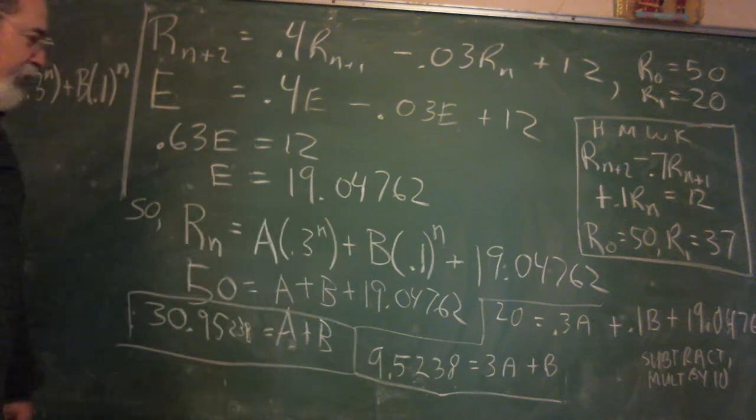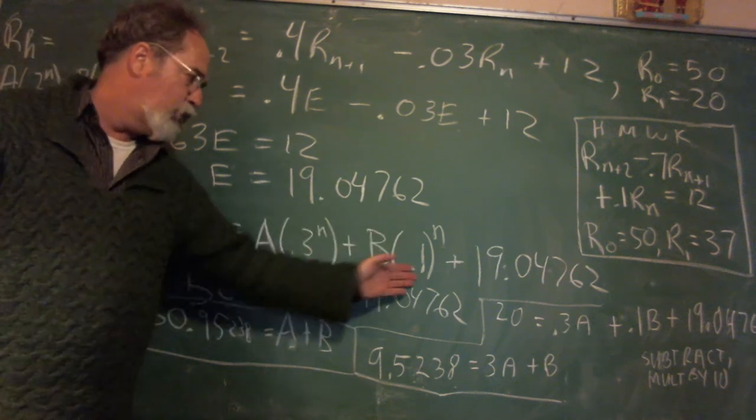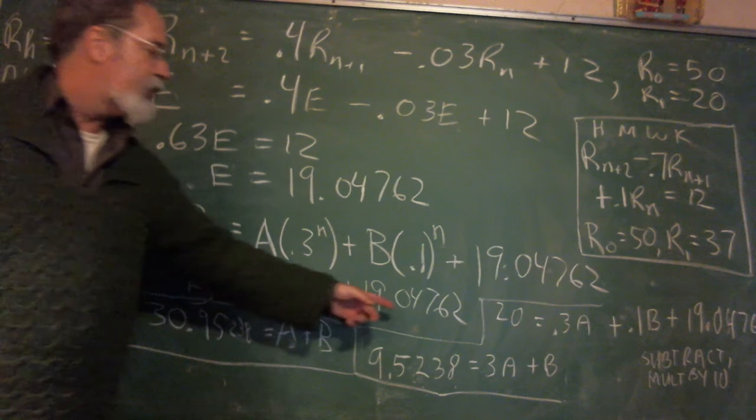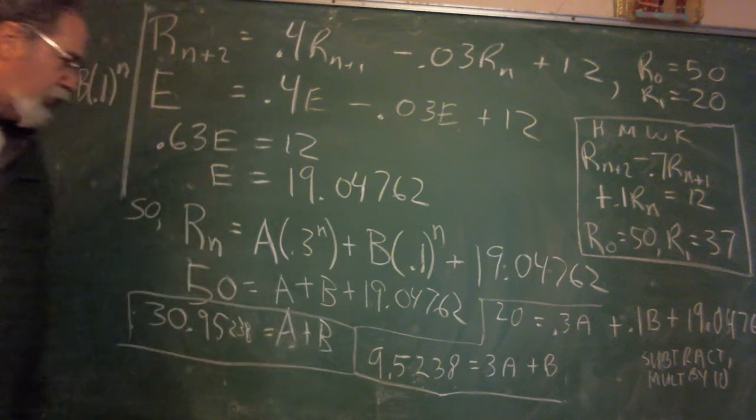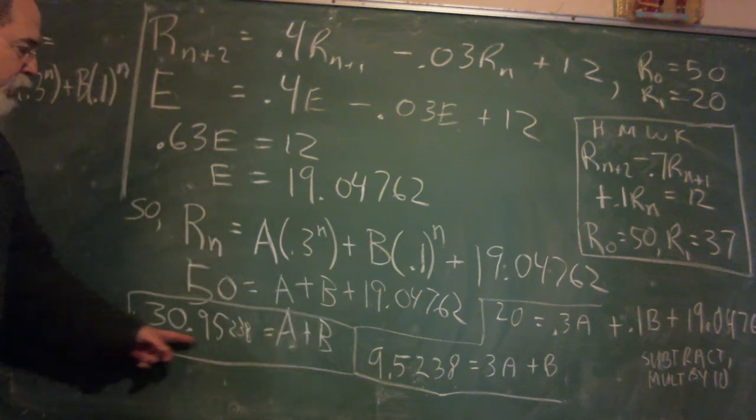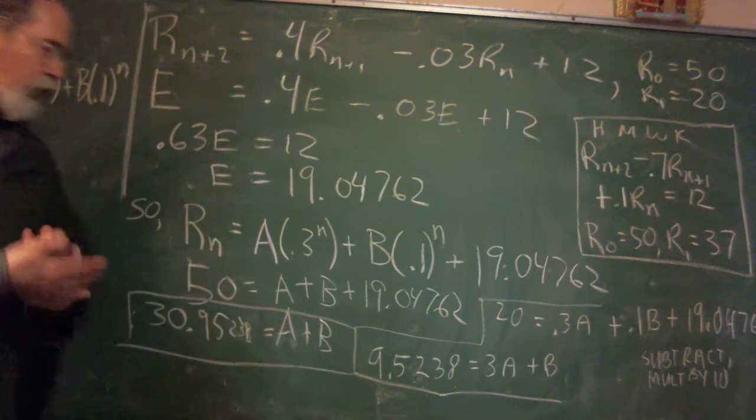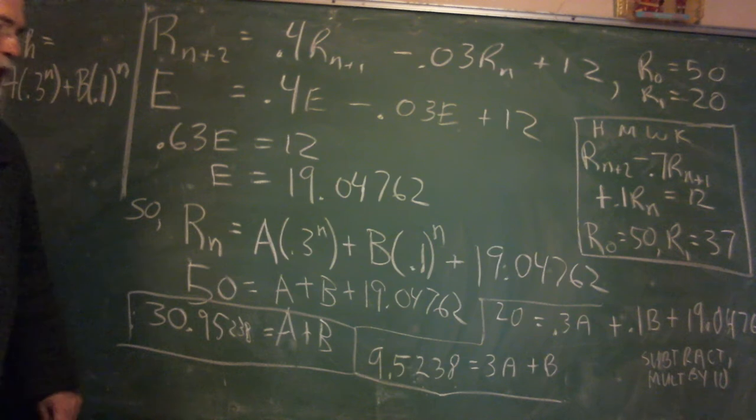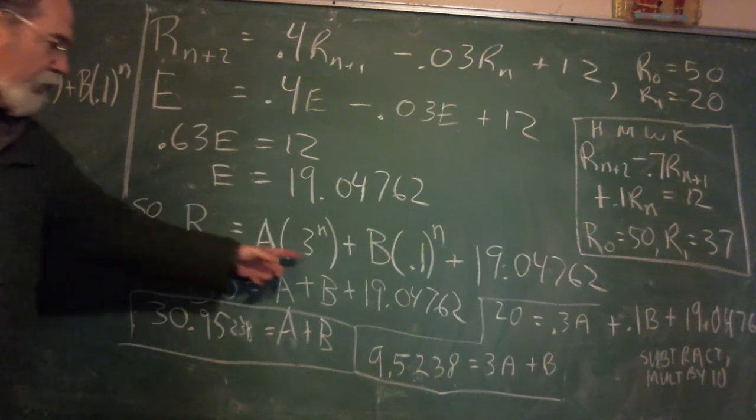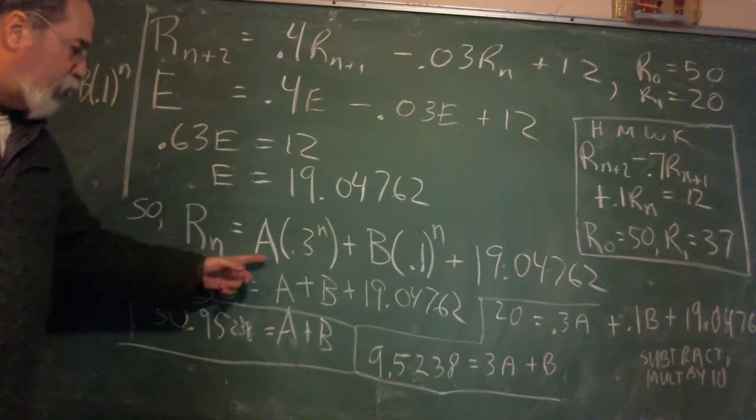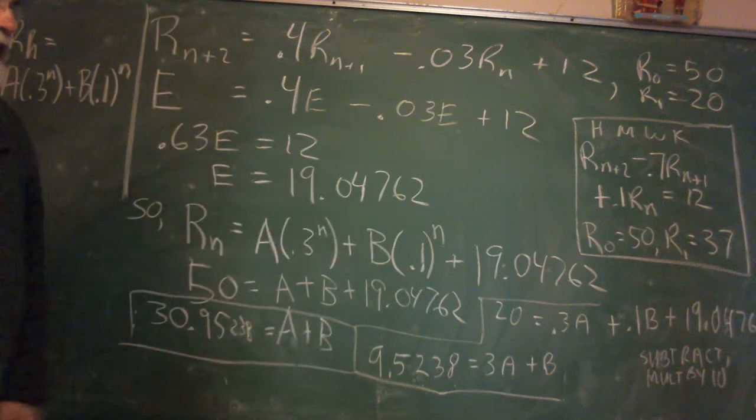So what do you do? You've got the homogeneous solution plus the particular solution. So this is the general solution. Now what do you do with the general solution? Everybody knows you put in the initial conditions and find the A and the B. Find these specific constants that are going to make this stuff true. So I put in a 0 for each N. Each of these pieces goes to 1. And I get A plus B plus this ugly number, 19.04762, equals 50. Subtract the 19.04762, you get 30.95238 equals A plus B. Now you need another A plus B equation, or another A and B equation. And you get that from the second initial condition.